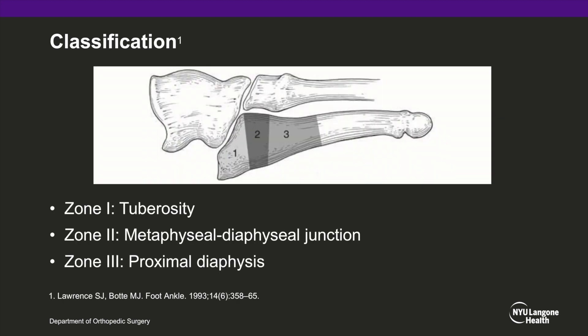5th metatarsal fractures have been classified based on the location of injury. This includes the tuberosity, zone 1; the metaphyseal-diaphyseal junction, zone 2; or the proximal diaphysis, zone 3. It is important to identify the correct zone of injury because healing characteristics and suggested treatments depend on the zone of injury.